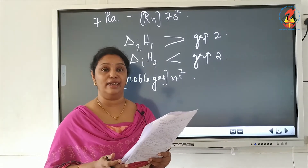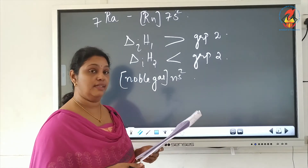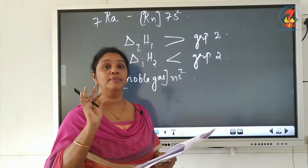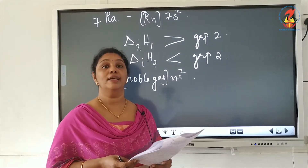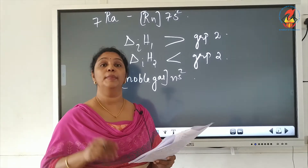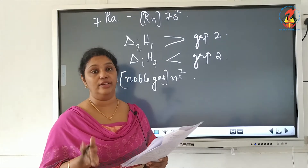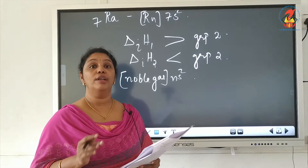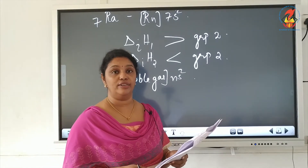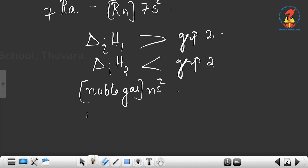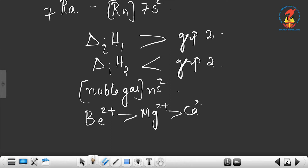The hydration enthalpy of group 2 decreases with increase in ionic size down the group. Smaller the size of the ion, higher is the hydration enthalpy. In group 2 elements, the beryllium ion has the smallest size so it has the highest hydration enthalpy. In decreasing order: Be²⁺ > Mg²⁺ > Ca²⁺ > Sr²⁺.